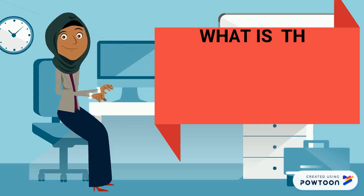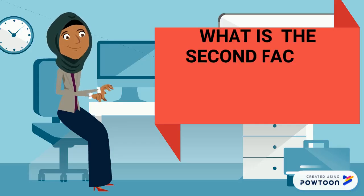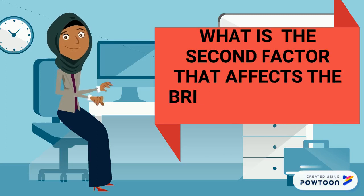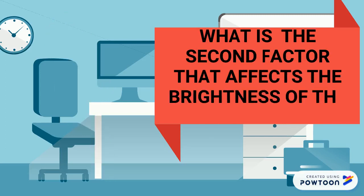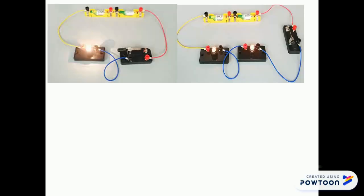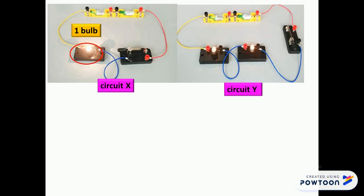Now let's see the second factor that affects the brightness of the bulbs. Let's compare between these two circuits, circuit X and circuit Y. We can see that in circuit X it has only one bulb, while in circuit Y it has two bulbs. So the manipulative variable for this test is the number of bulbs.